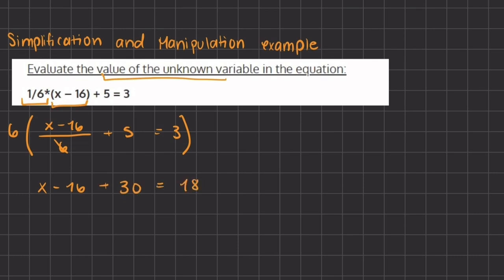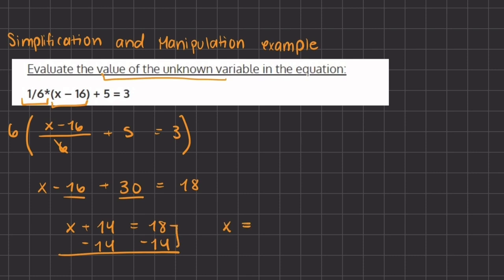Now we combine like terms to find the value of x. We combine the constants: negative 16 plus 30 gives us 14. So we have x plus 14 equals 18. To isolate x, we subtract 14 from both sides, leaving x equals 18 minus 14, which gives us 4. So the final value of x is 4, and we solved this problem using both simplification and manipulation methods.